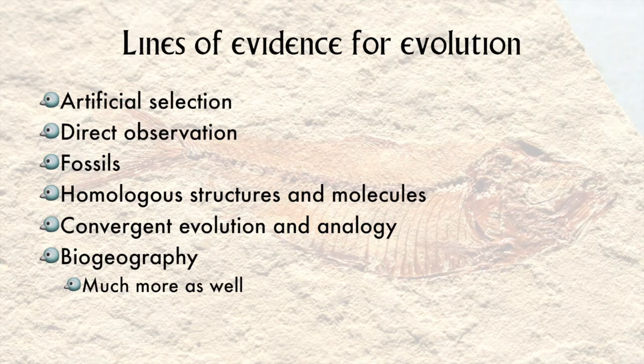Darwin apologized for the paucity of evidence he had for his theory. This was modesty on his part, as he had accumulated quite a bit of observational and experimental data. But since his time, quite a bit of evidence has been confirming the main principles of his original theory and modifying the rough edges of it as well.